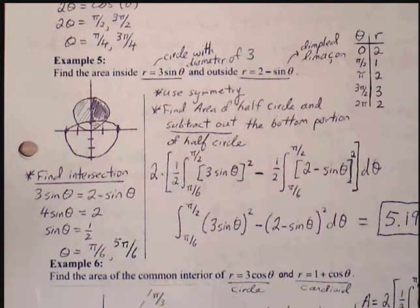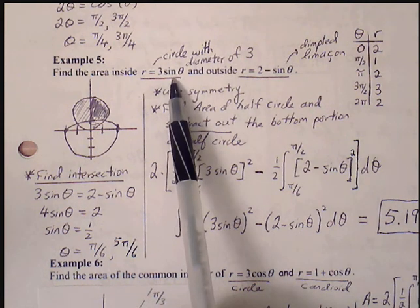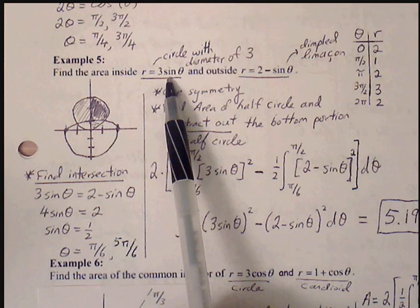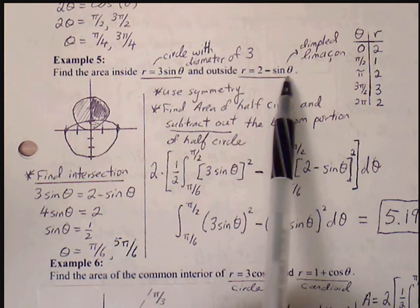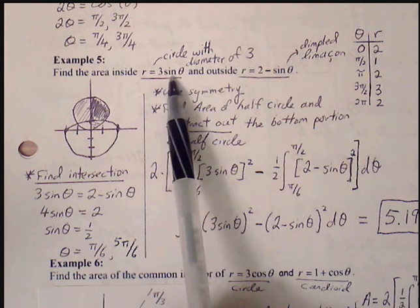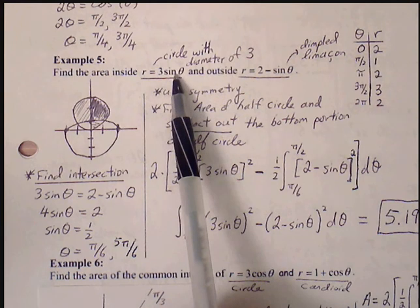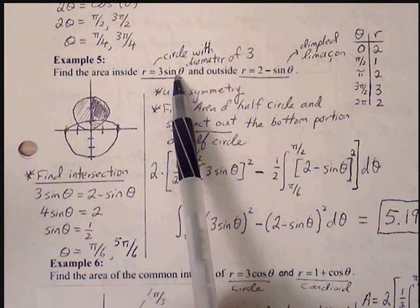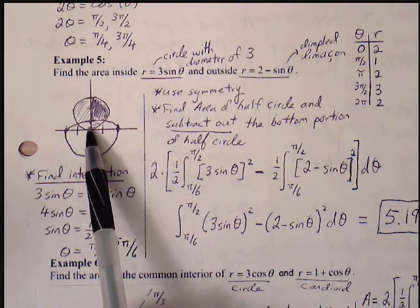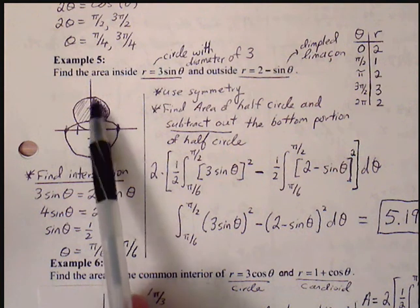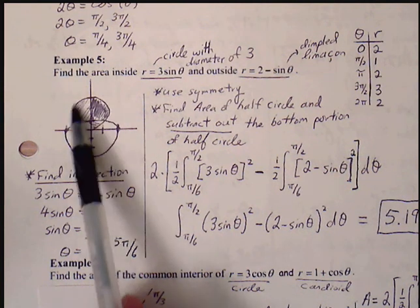Now let's look at some more involved problems. Example 5: Find the area inside r equals 3 sine of theta — a circle with a diameter of 3 — and outside the dimpled limaçon r equals 2 minus sine of theta. The circle lies along the y-axis with symmetry about the y-axis, extending 3 units up.